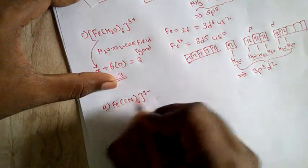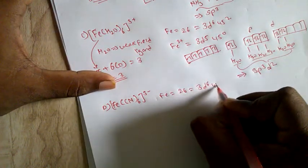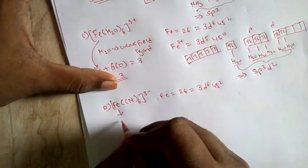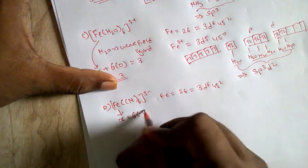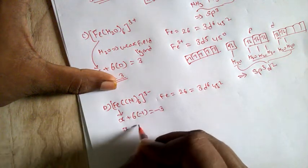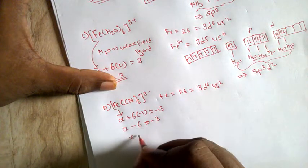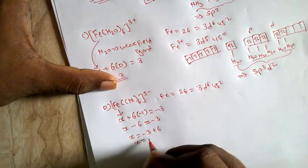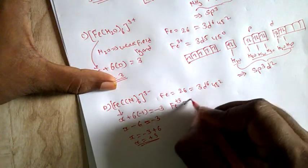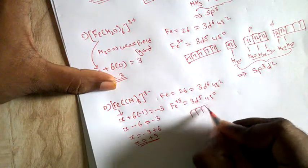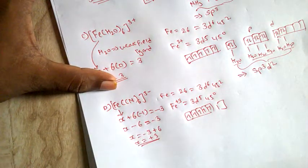Now solving the last complex: [Fe(CN)₆]³⁻. Iron's atomic number is 26, electronic configuration 3d⁶. Finding the oxidation state: consider X plus 6 times CN⁻ (oxidation state −1) equals the charge of the complex, which is −3. So X − 6 equals −3, giving X equals +3. Iron is in the +3 oxidation state. Electronic configuration becomes 3d⁵ 4s⁰.